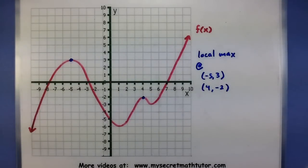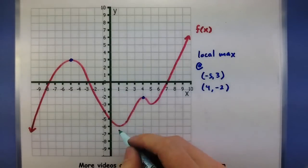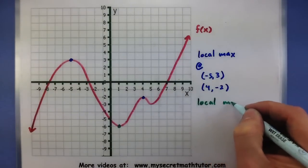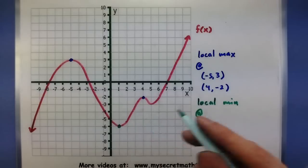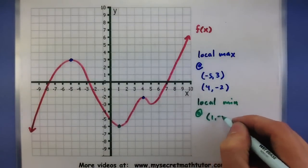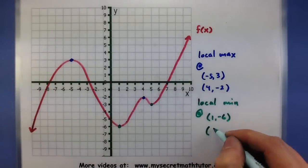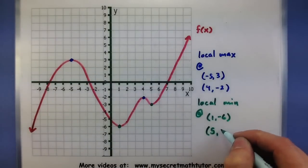Okay, local minimums, looks like here's one. One at (1, -6), looks like the other one is here at (5, -3). And just like that you have all of your local maximums and minimums.